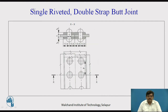Then we have single riveted double strap butt joint. This is the first plate and this is the second plate, and through each only one line of rivets passes. Double strap because we have two cover plates — the first cover plate and the second cover plate. Butt joint because the two plates to be joined are placed face to face next to each other. So: single riveted — one line; double strap — two cover plates; butt joint — plates placed in front of each other.